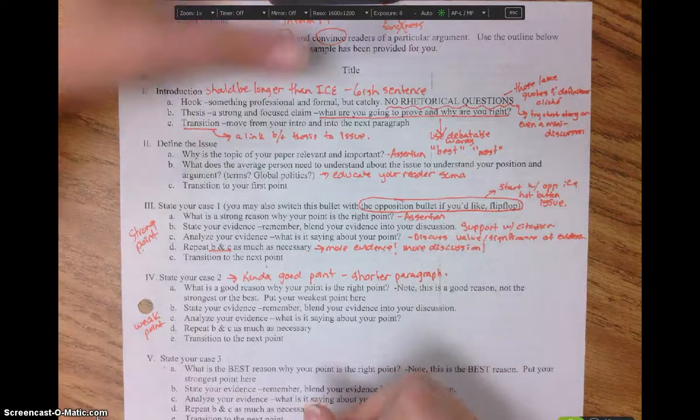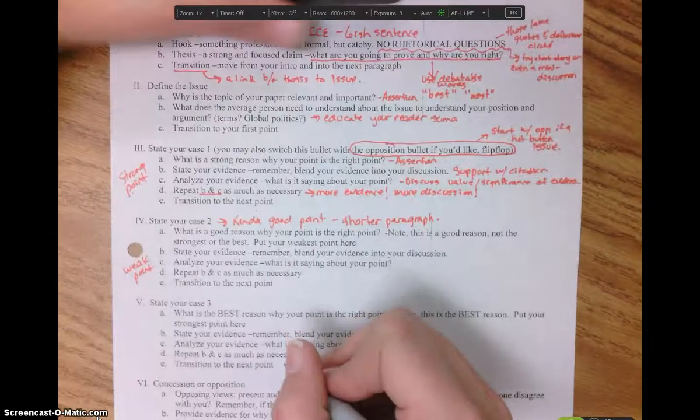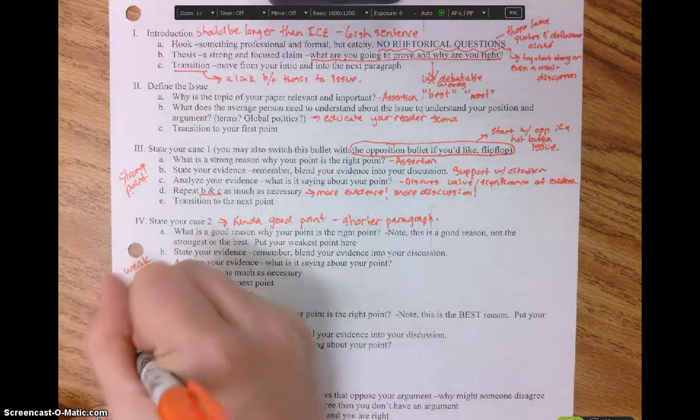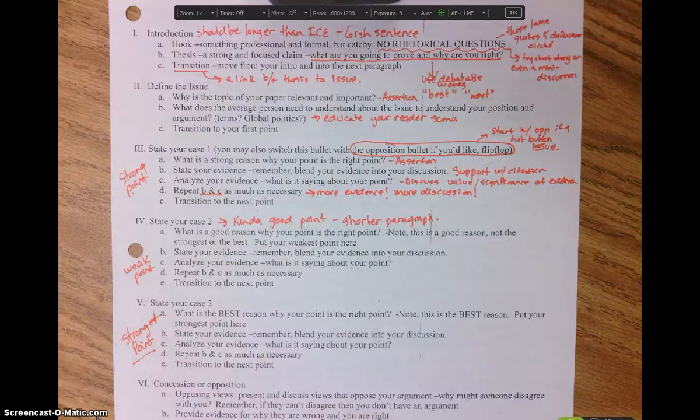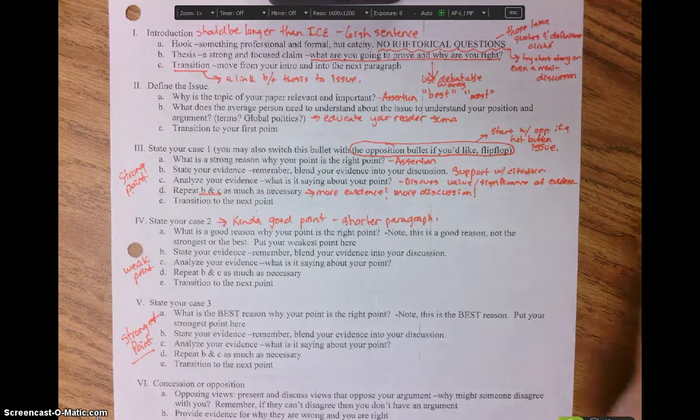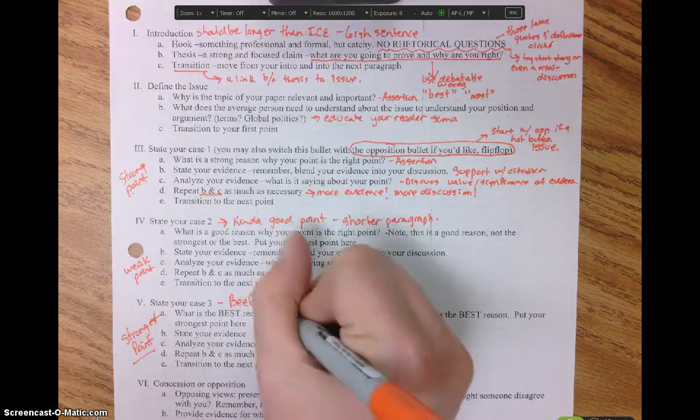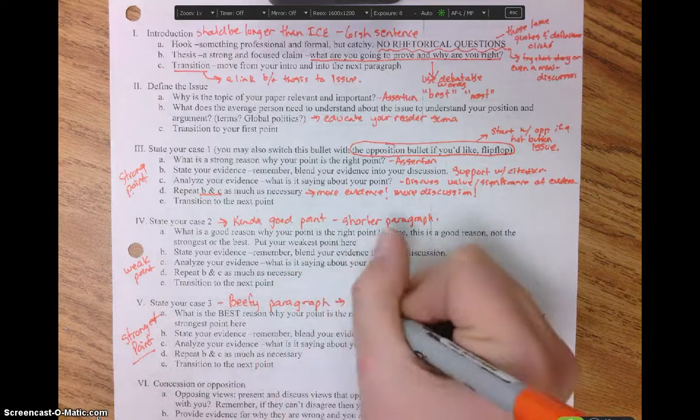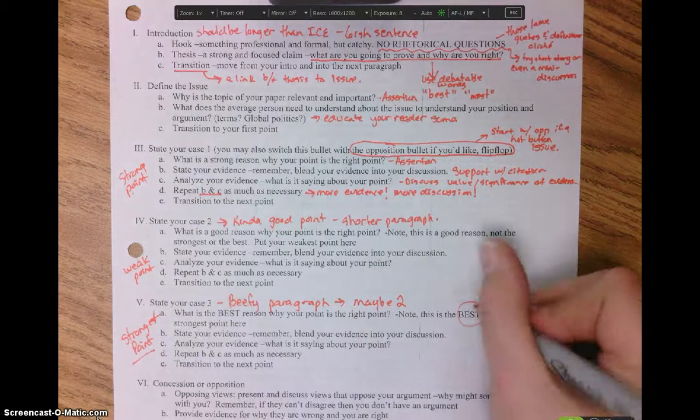Alright, number five is going to involve your strongest point. This is your absolute best piece of evidence. You want it down here at the end because you're wrapping up your case, you've already gotten your audience on your side, you've used all your rhetorical strategies, you're there. You're going to make this into a big, beefy paragraph. Maybe even two paragraphs. You might want to break the paragraph somewhere so it's not super long. But just break it in a smart place. This is your best reason.